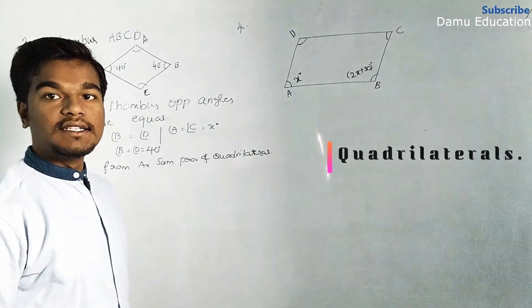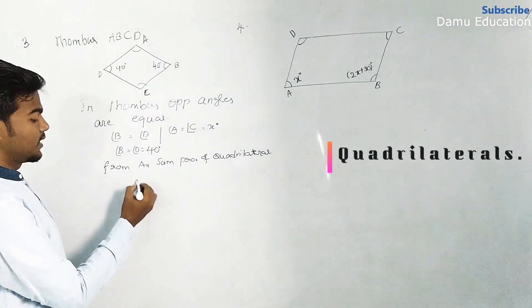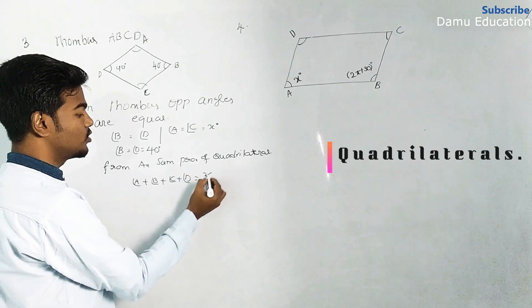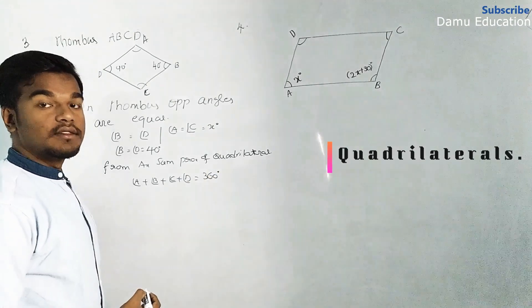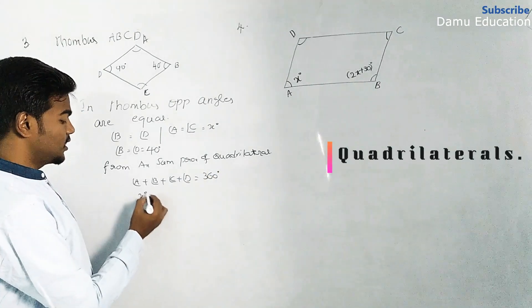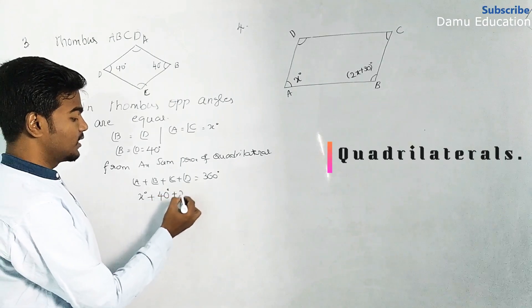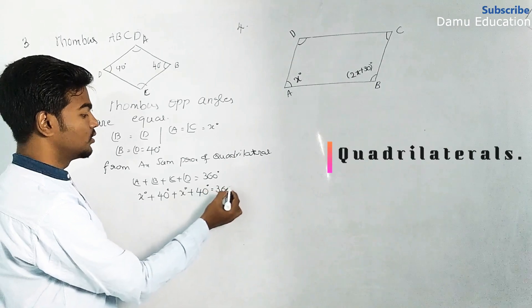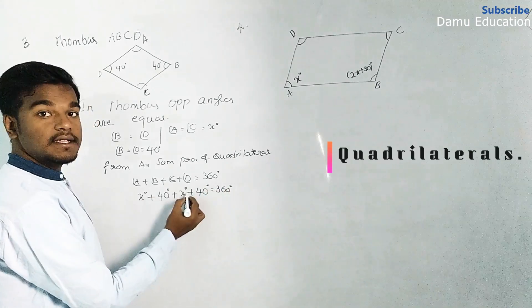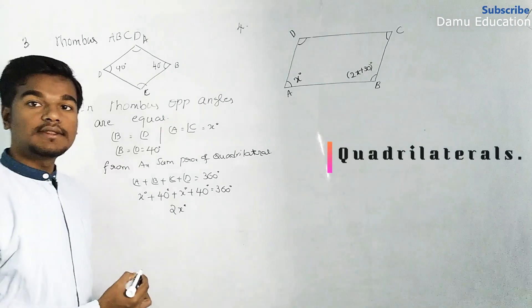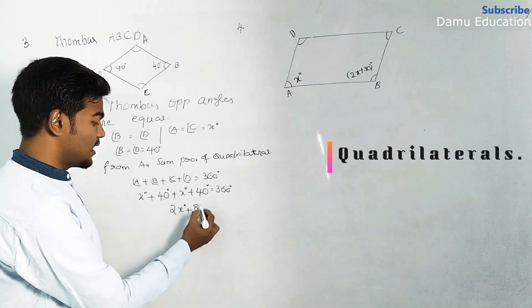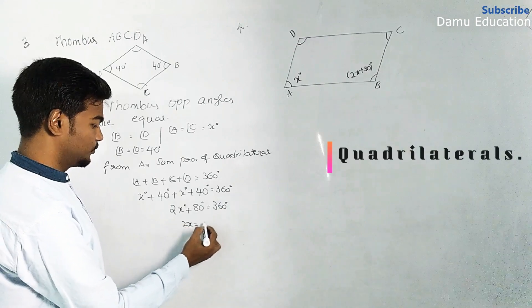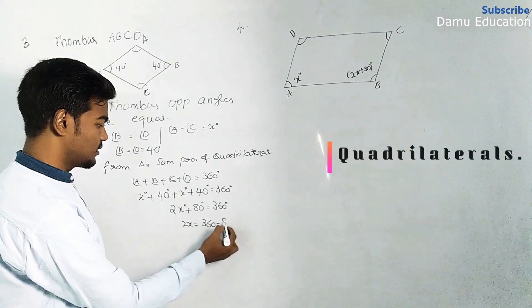Using the angle sum property of a quadrilateral, angle A plus angle B plus angle C plus angle D equals 360 degrees. Substituting: x plus 40 plus x plus 40 equals 360 degrees. So x plus x gives 2x, and 40 plus 40 gives 80, meaning 2x plus 80 equals 360 degrees.